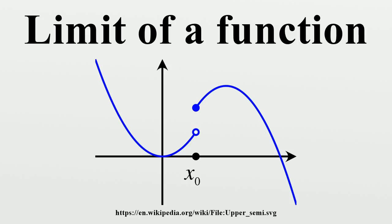For functions of more than one variable: by noting that |x − p| represents a distance, the definition of a limit can be extended to functions of more than one variable. In the case of a function f: ℝ² → ℝ, if for every ε > 0 there exists a δ > 0 such that for all points with 0 < |x⃗ − p⃗| < δ, then |f − L| < ε, where |x⃗ − p⃗| represents the Euclidean distance. This can be extended to any number of variables.